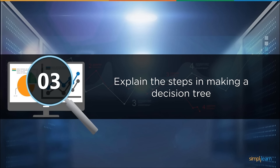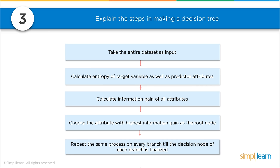Explain the steps in making a decision tree. When you make a decision tree, you take the entire dataset as input. You calculate the entropy of the target variable as well as the predictor attributes — entropy is just how chaotic the data is. You then calculate the information gain of all attributes and choose the attribute with the highest information gain as the root node. Whichever split lowers the chaos the most is where you split, forming your root node. Repeat the same procedure on every branch until the decision node of each branch is finalized.